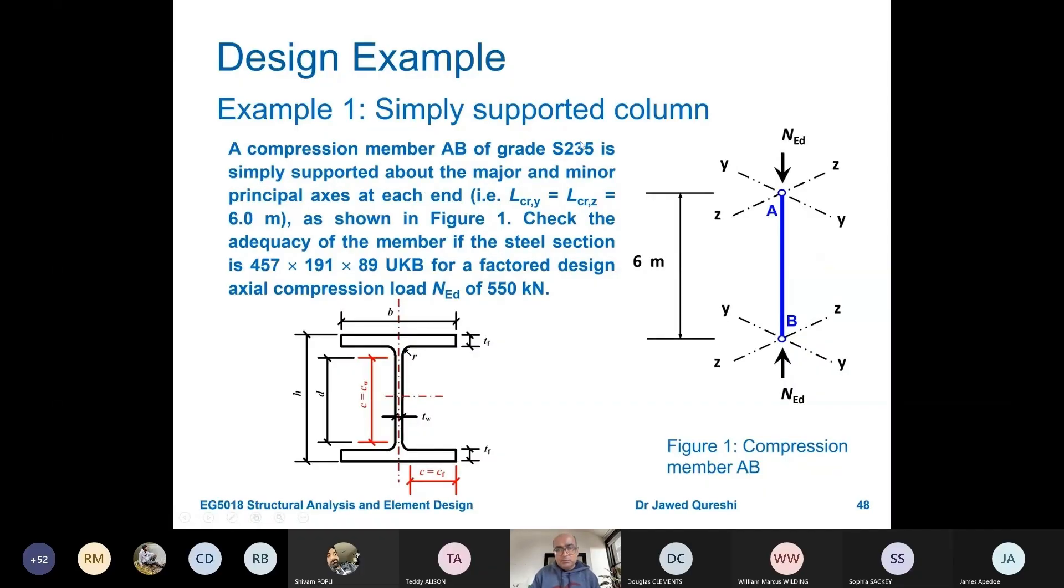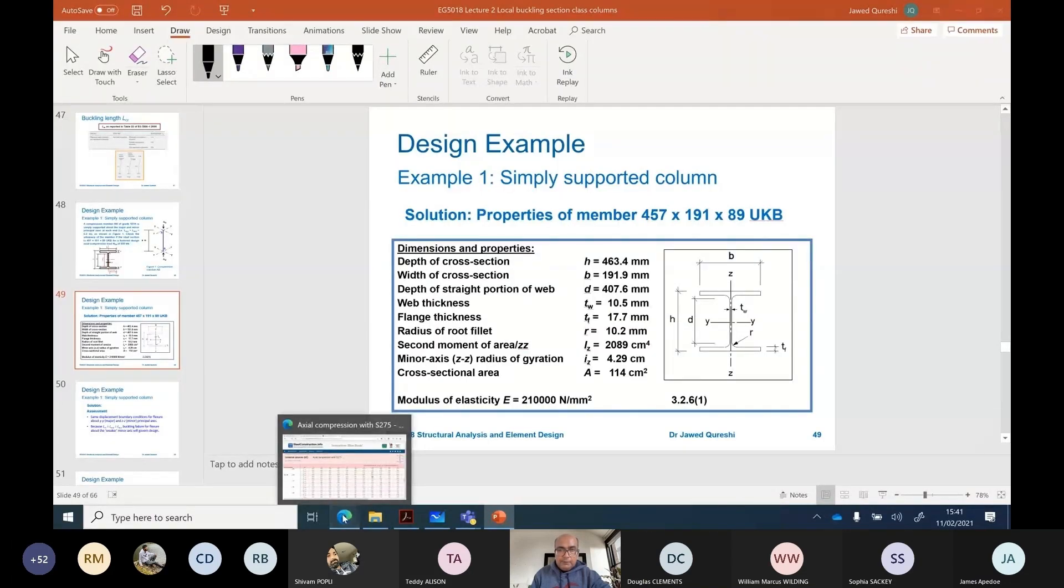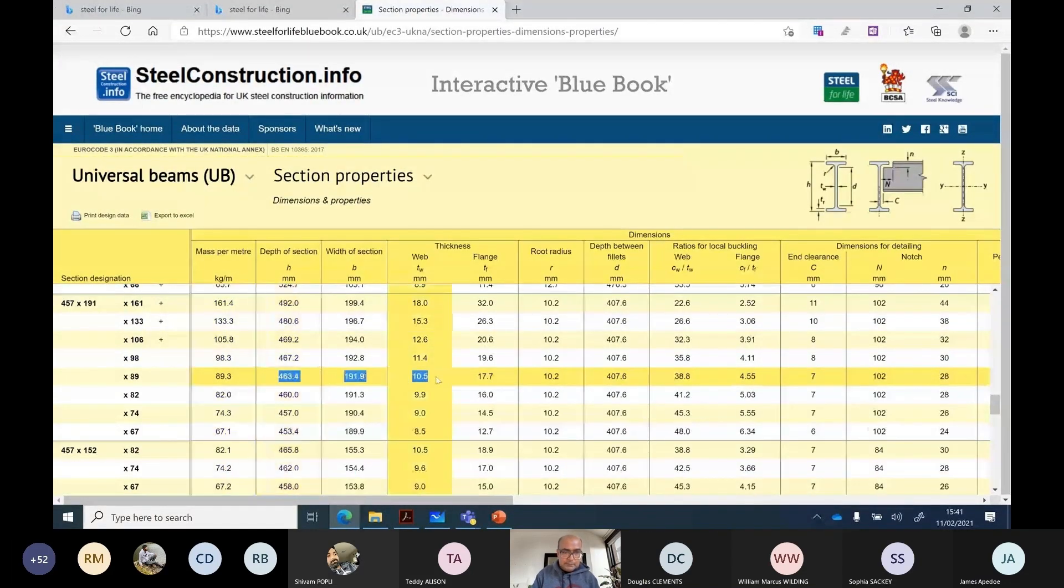In this example steel grade is S235. Practically in the UK normally with columns we use S355. This is just for demonstration. LCR_Y and LCR_Z are buckling lengths. Axial compressive load N_ED is given as 550 kilonewtons. The first thing is that you have to locate these properties. Now you know how to find these properties, don't you? Blue Book, section table. So simply go to section table 457x191x89. This is the section.